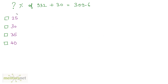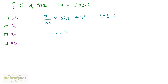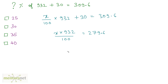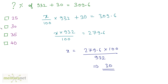Moving on to the next question: how much percent of 932 plus 30 is equal to 309.6? Let us put this as x. I can write x upon 100 times 932 plus 30 is equal to 309.6. So x times 932 divided by 100 is equal to 309.6 minus 30, which gives 279.6. Therefore x is equal to 279.6 times 100 divided by 932, and the answer is 30, so the option is option 2.